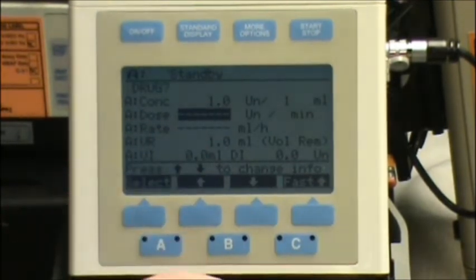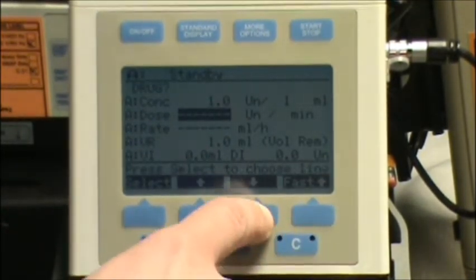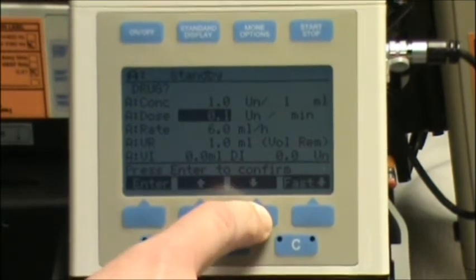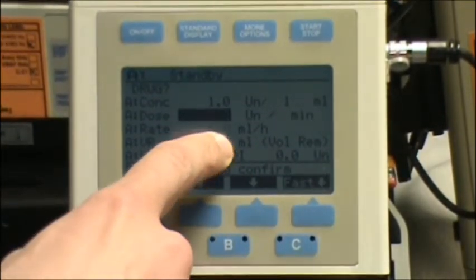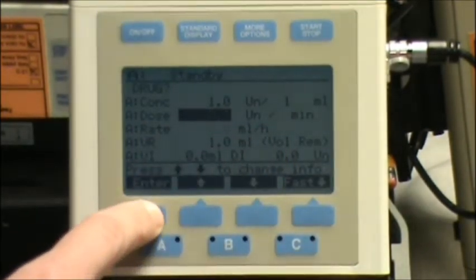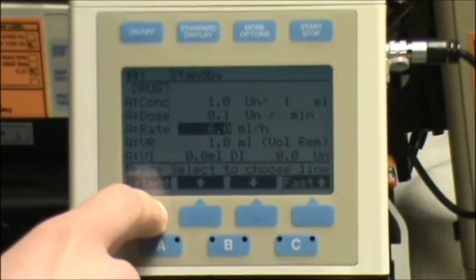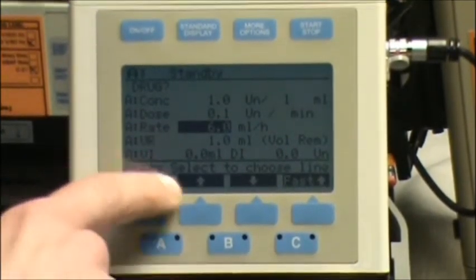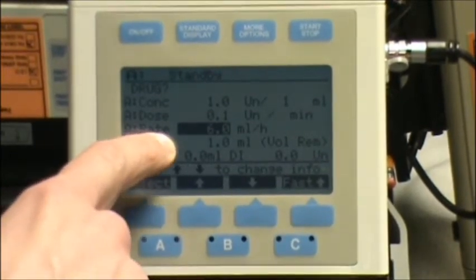So the dose, I said I wanted .04 units a minute. So I'm going to scroll down here and I'm going to show you one of the limitations of the triple channel. It's not going to let me go down below .1 units a minute. So I know that,